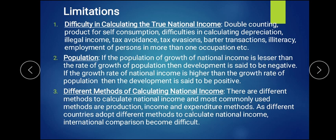To summarize the limitations: first, difficulty in calculating national income due to double counting, depreciation, self-consumption, and tax evasion. Second, population — the growth rate of population should be lower than national income growth rate; if it is higher, development is negative. Third, different countries use different methods of calculation, making it very difficult to compare national income between countries.